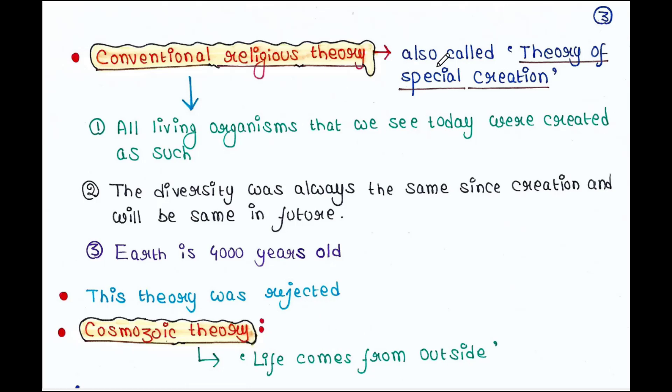This theory is also called the theory of special creation. According to this theory, all living organisms that we see today were created as such. The diversity was always the same since creation and will be same in future. Earth is only 4,000 years old. So, this theory was rejected.